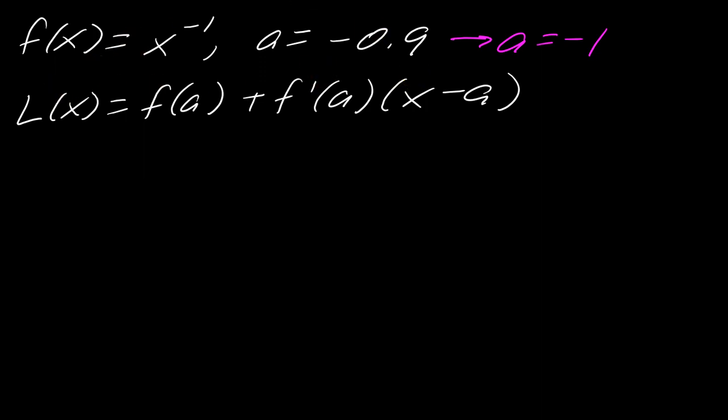So what I want to do first is let's go ahead and take the derivative of f prime of x. So that's negative x to the negative second. Then I want to fill in some of these numbers. So let's evaluate f of negative 1. So that would just equal negative 1. And then let's evaluate f prime of negative 1. So that will also equal negative 1.